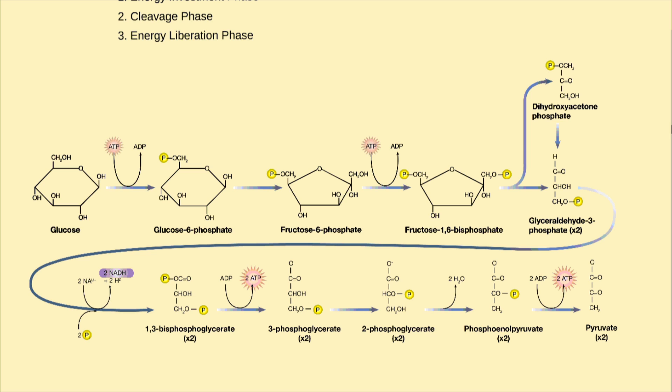Because there are two molecules of pyruvate created from every glucose molecule, the total yield of glycolysis is two pyruvate, two ATP, and two NADH.